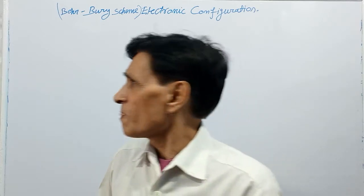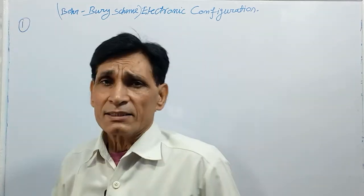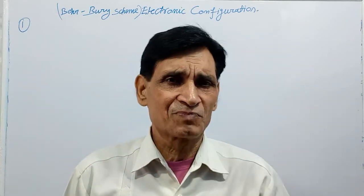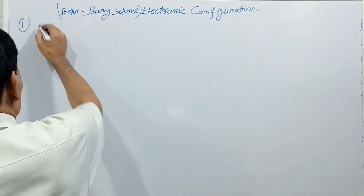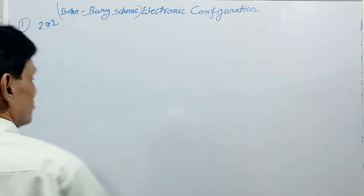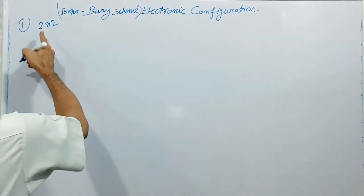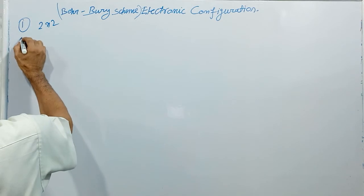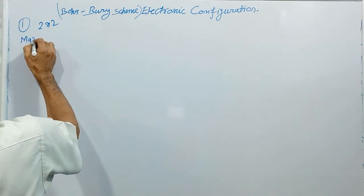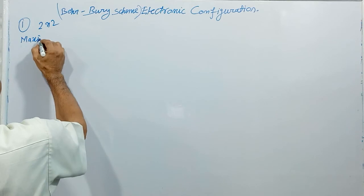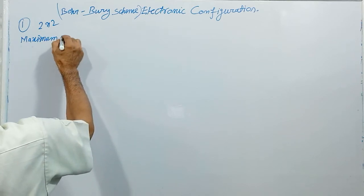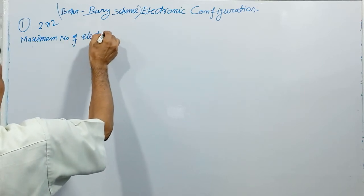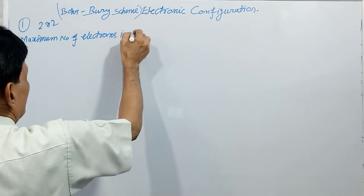According to the Bohr-Bury rule, the first rule is: the maximum possible number of electrons which a shell can accommodate is given by the formula 2n². What does this mean? In the first shell, the K shell, the maximum number of electrons equals 2n², which is 2 × 1² = 2 electrons.